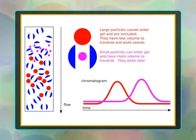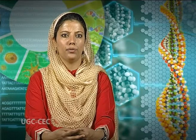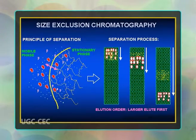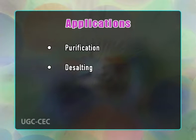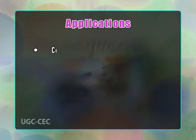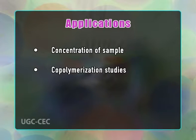The basic principle of size exclusion chromatography is quite simple. A column of gel particles or porous matrix is in equilibrium with a suitable mobile phase. Large molecules are completely excluded from the pores, pass through the space between gel particles, and come first in the effluent. Smaller molecules are distributed between the inside and outside of the molecular sieve and pass through the column at a slower rate, hence appearing later in the effluent. Applications include: purification, desalting, protein-ligand binding studies, protein folding studies, concentration of sample, co-polymerization studies, and relative molecular mass determination.